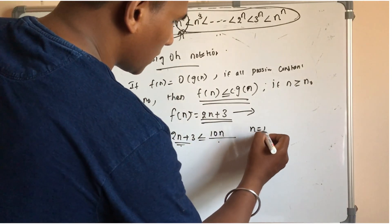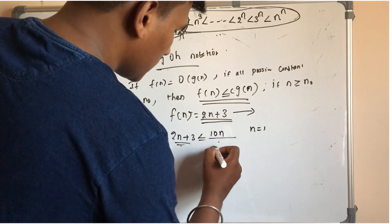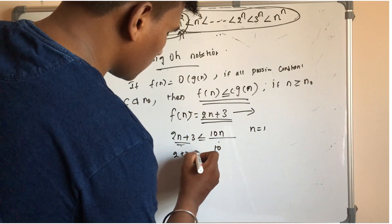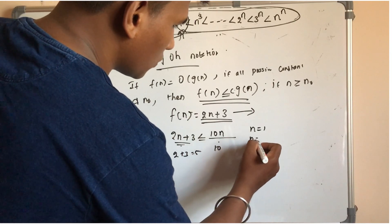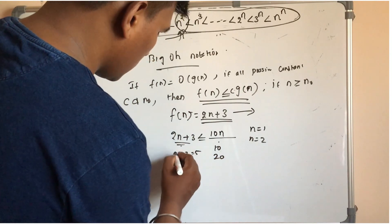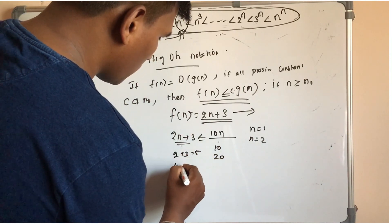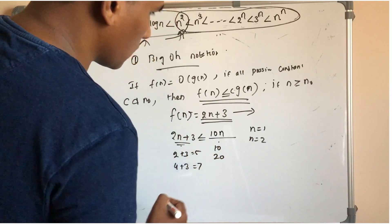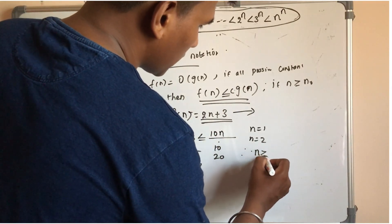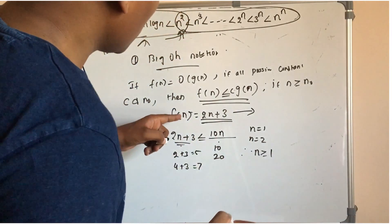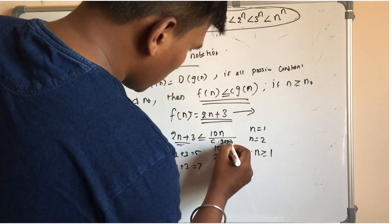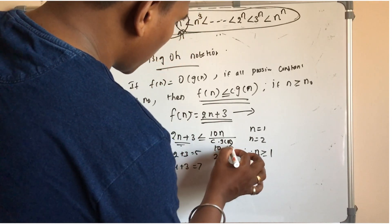For example, n is equal to 1. One side is 10, the other is 2 plus 3 equals 5. For n equal to 2, compare: this is greater than 1. So comparing the upper bound proof, n is equal to 1, f(n) equals c into g(n). This is g(n). This is the correct proof. Comparing: f(n) is equal to g(n).